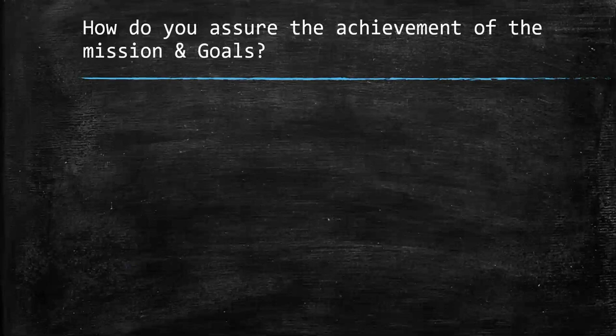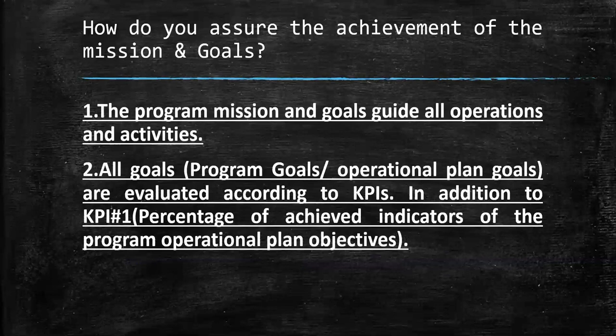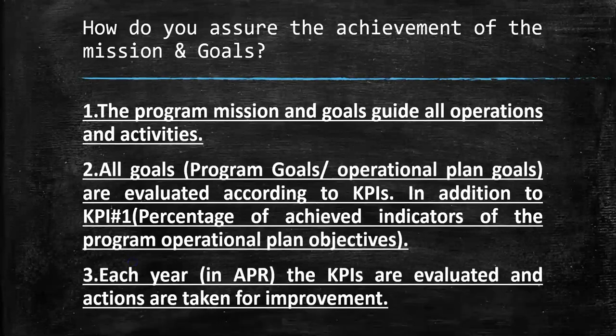How do you assure the achievement of the mission and goals? The program mission and goals guide all operations and activities. All goals are evaluated according to KPIs — key performance indicators. For example, KPI 1: percentage of achieved indicators of the program operational plan objectives — this is required by NCAAA. Each year, in the annual program report, the key performance indicators are evaluated and actions are taken for improvement.